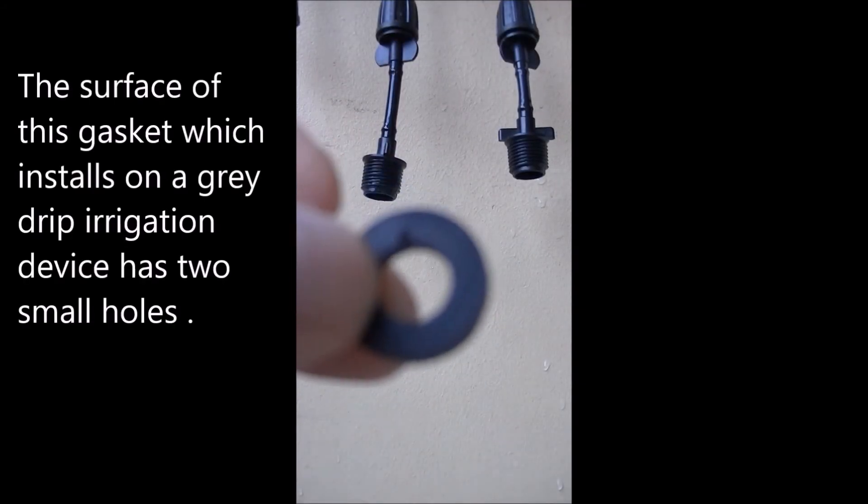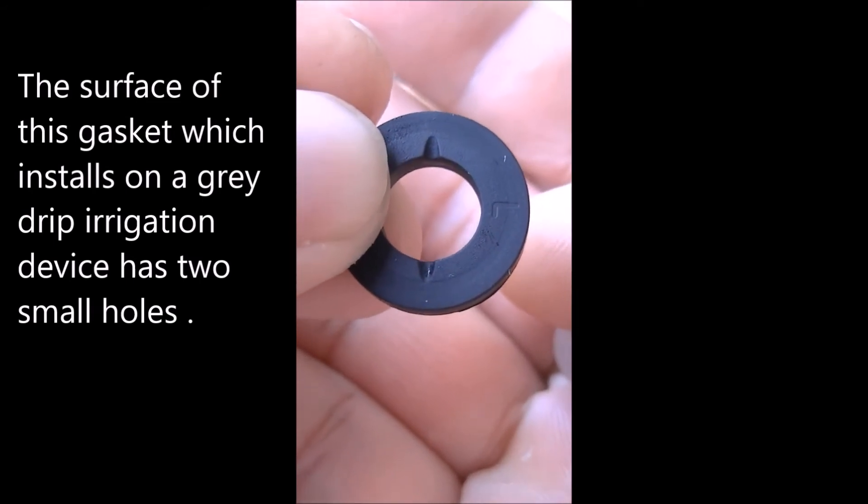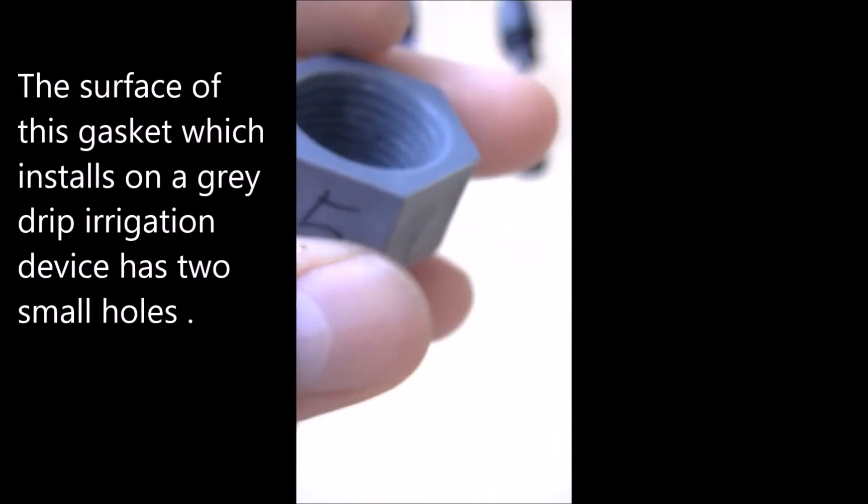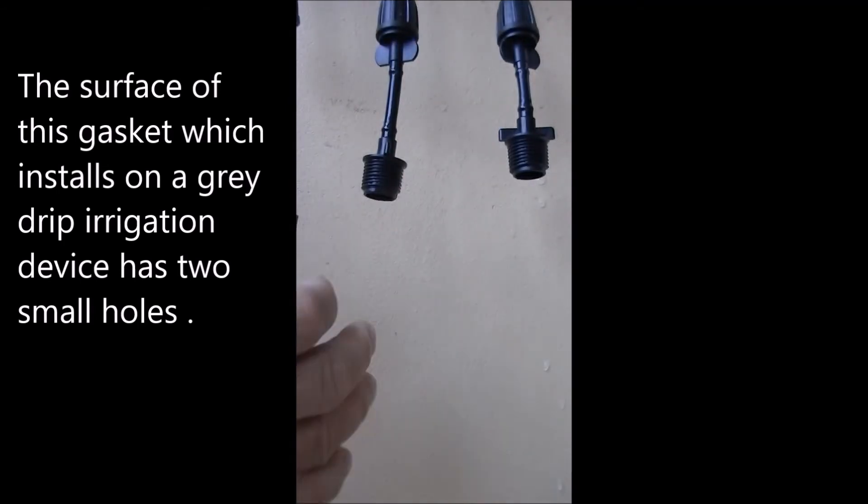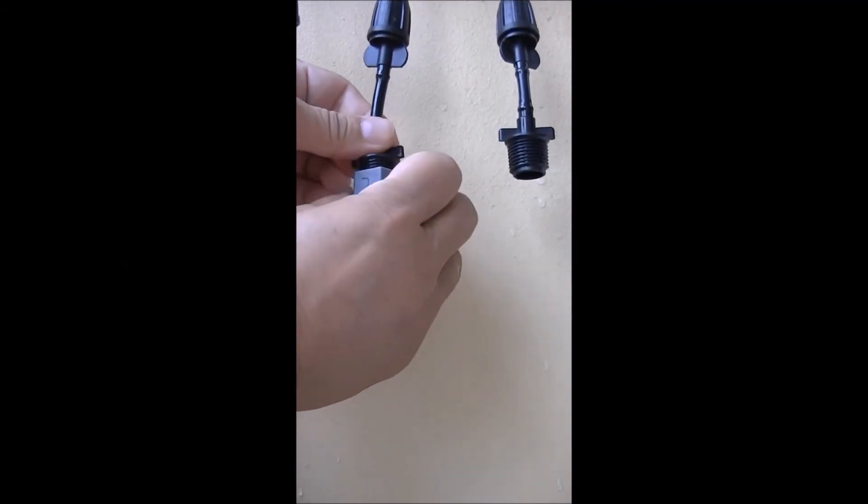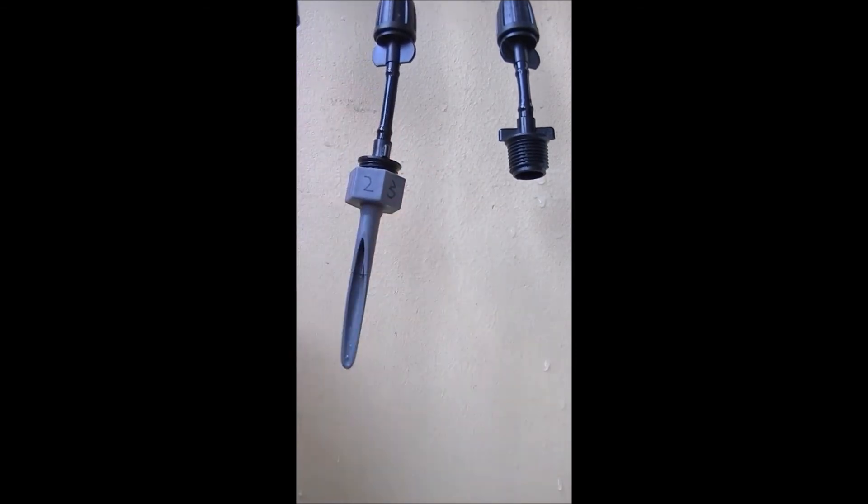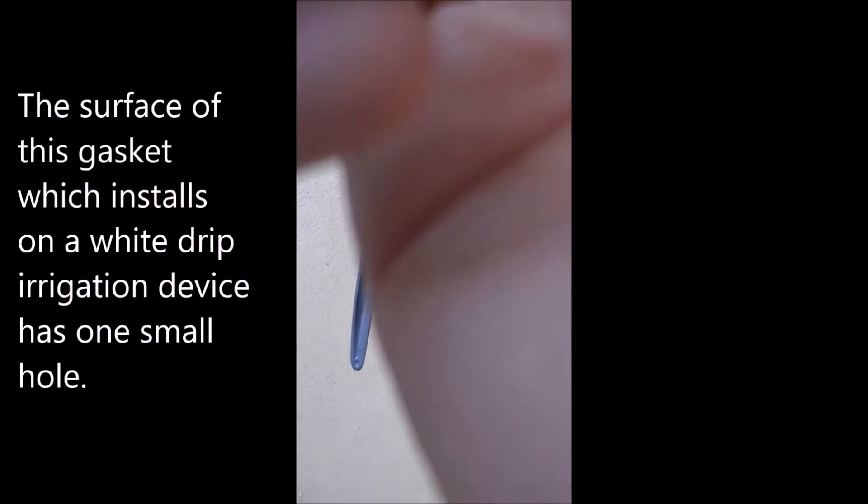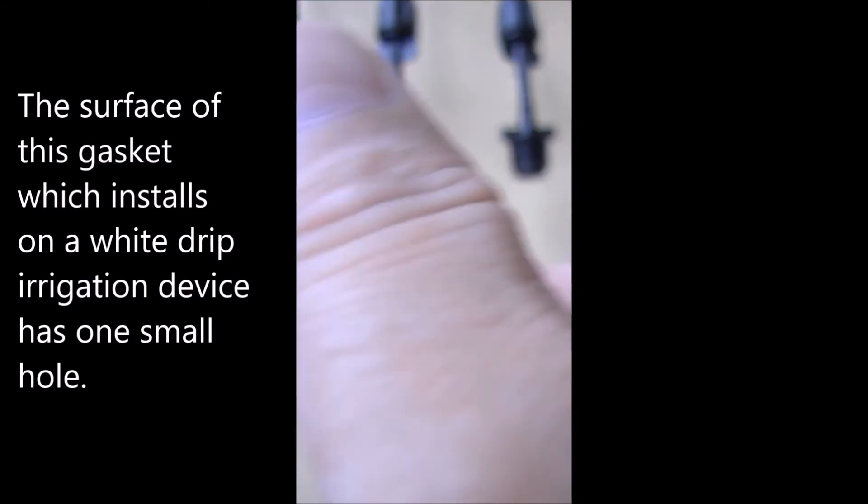The surface of this gasket which installs on a gray drip irrigation device has two small holes. The surface of this gasket which installs on a white drip irrigation device has one small hole.